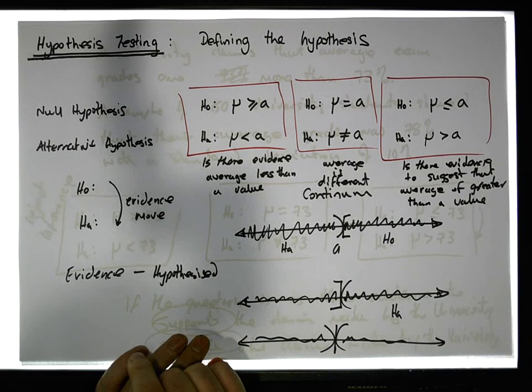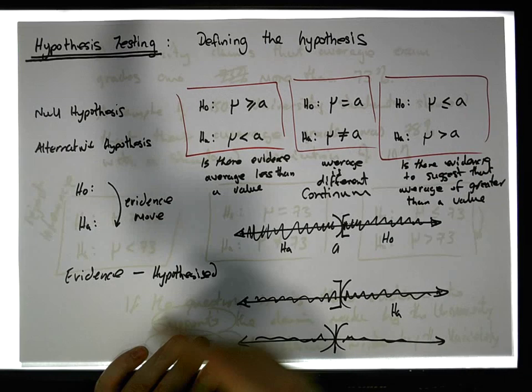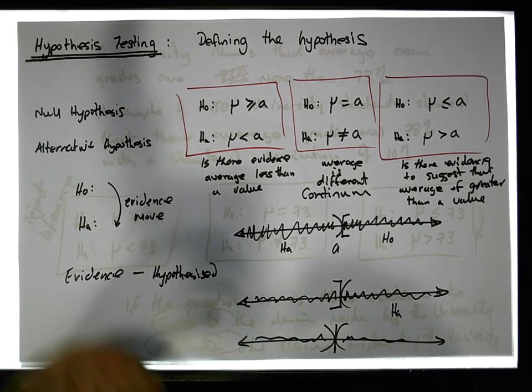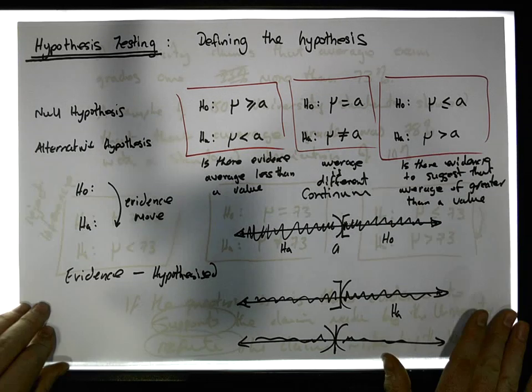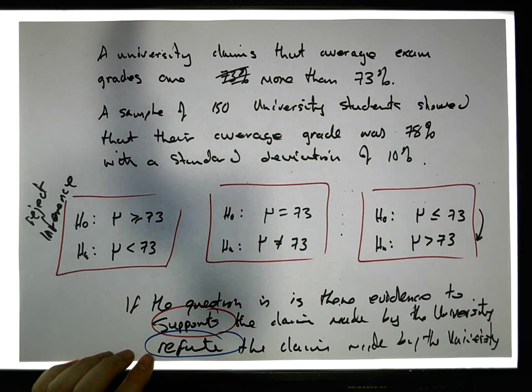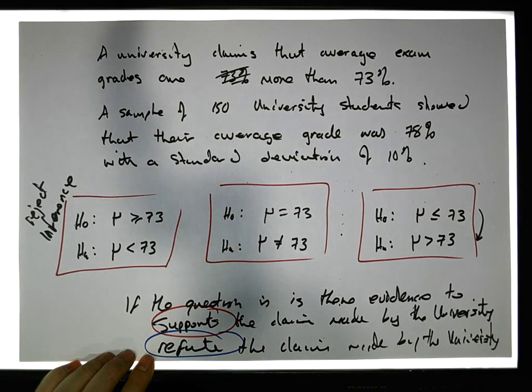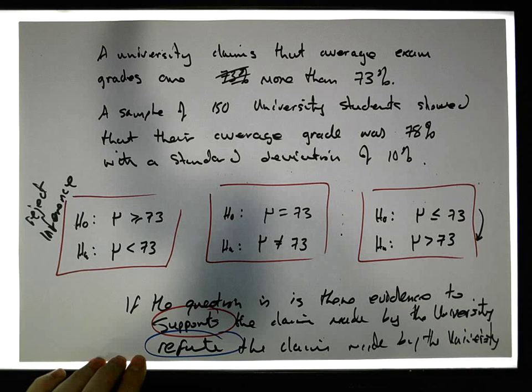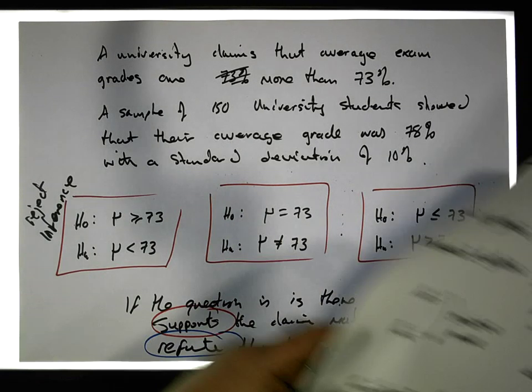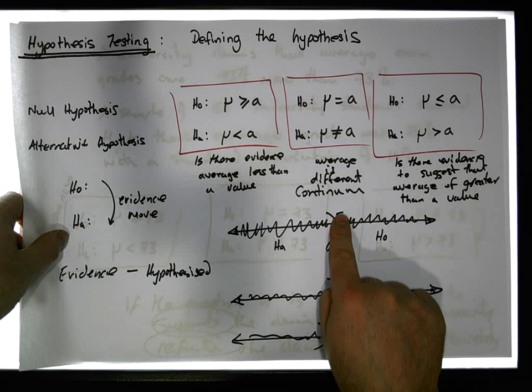Now, the question is whether you need evidence to support a claim or whether you need evidence to refute a claim. Well, it depends on what the claim is actually saying. As you can see in this situation, if the claim is saying more than 73%, well, here's 73 is the demarcation point. It's this sort of cut-off point on the distribution. It's the cut-off point with respect to a continuum.